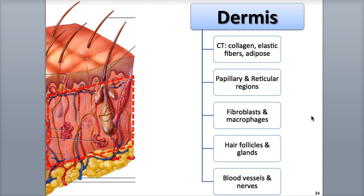Cell types found in the dermis include fibroblasts, which secrete protein fibers — the suffix 'blast' means to build or grow. Also, a type of white blood cell called a macrophage, and adipocytes or fat cells, are found in the dermis near the subcutaneous layer.